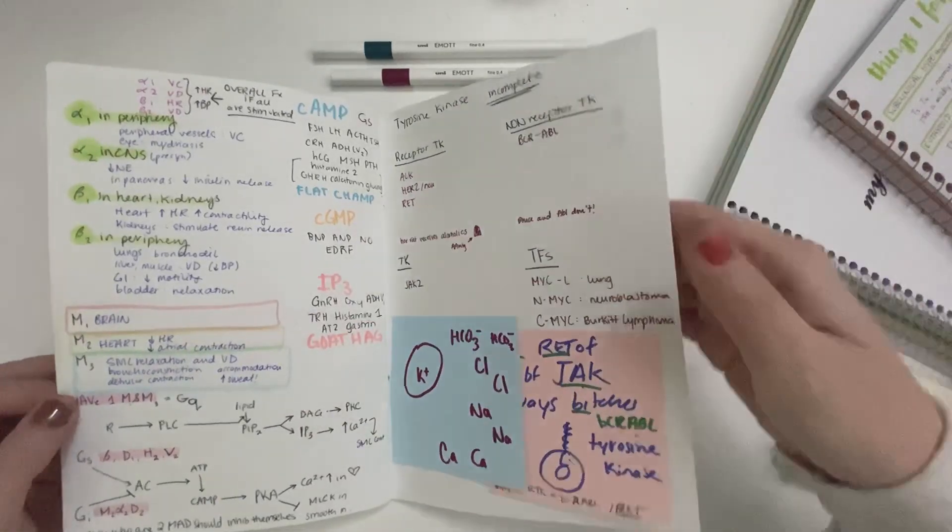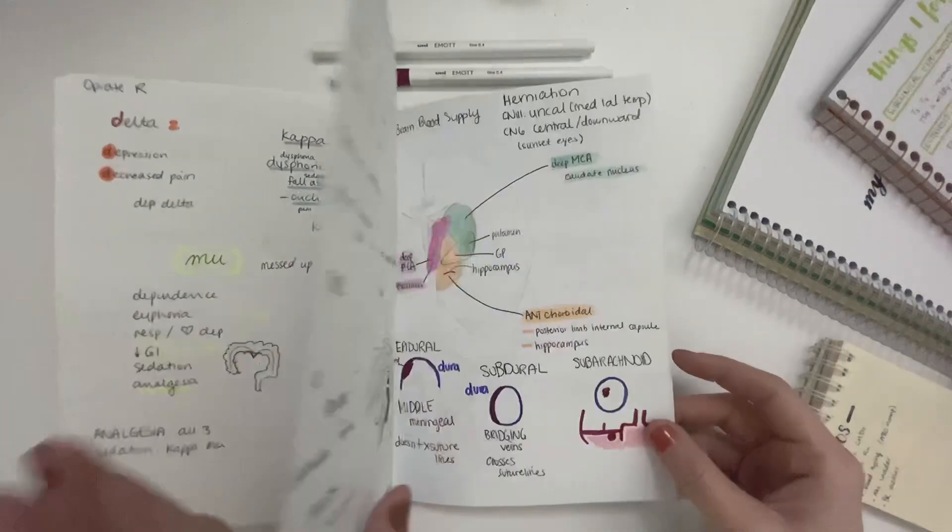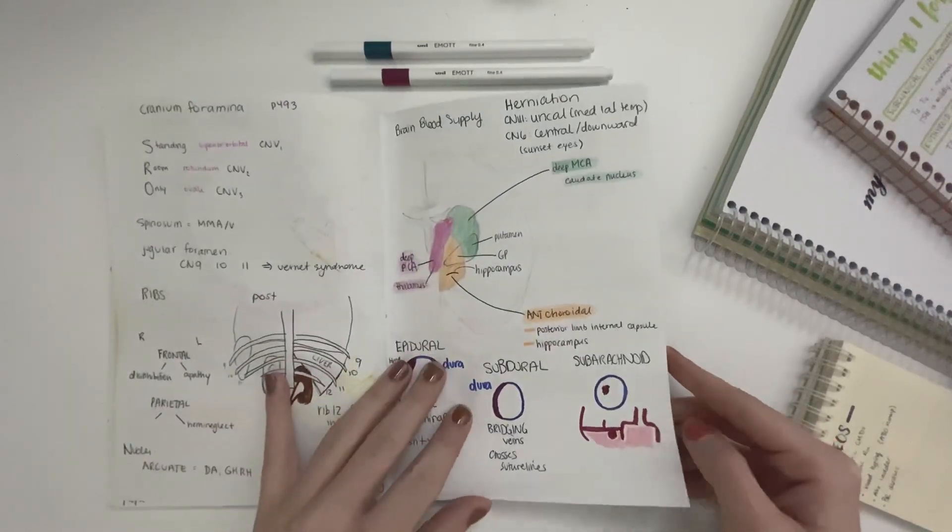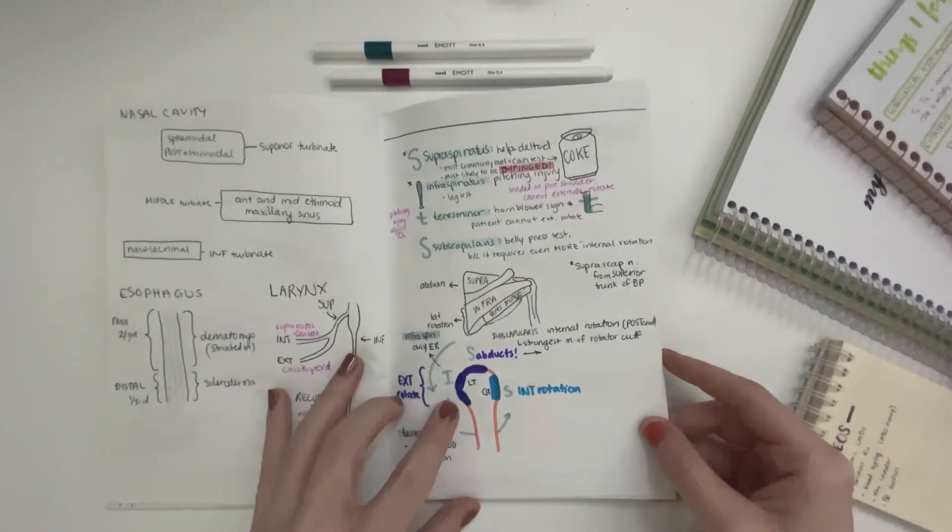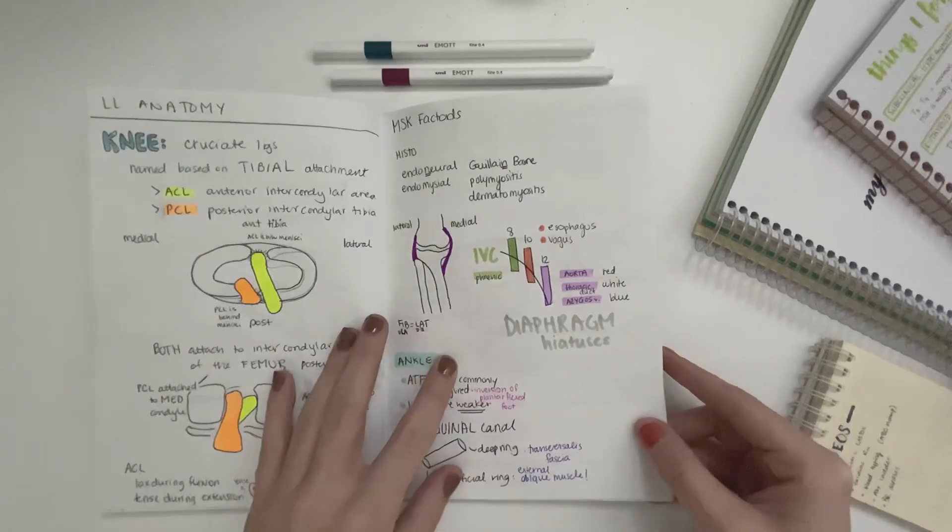Anyway, as you can see, I used a myriad of colors, drawings, highlighters, post-its, and everything I could think of to keep the information in this notebook. What made it super useful was that I really was reviewing it quite a lot.